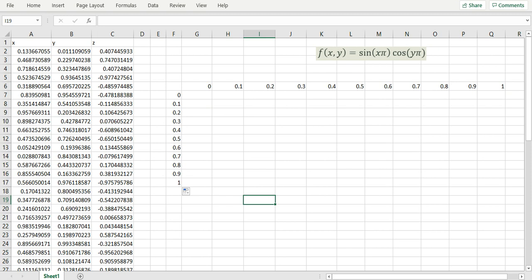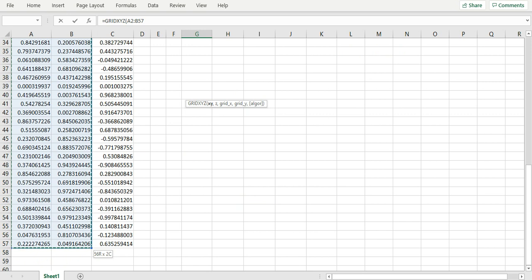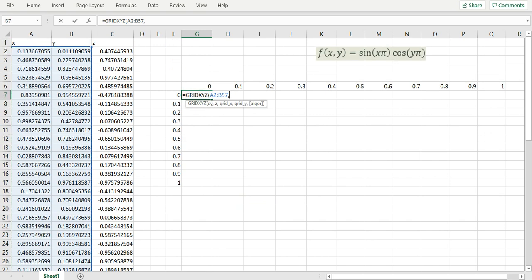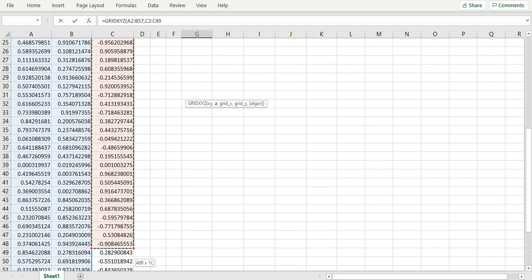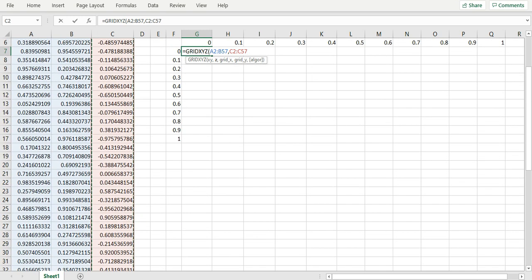Next, I will use the GRIDXYZ function to map these random points onto the uniform grid. Starting from the top cell right here. My first parameter for GRIDXYZ is the XY points. My second parameter is the corresponding Z values. My third parameter is the row X coordinates for my grid. And my fourth parameter is the column Y coordinates for my grid.